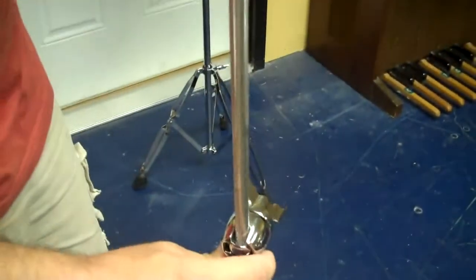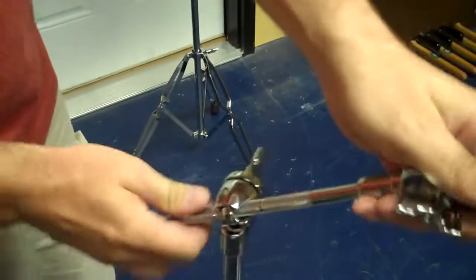So a straight stand is straight. A boom stand has a boom arm that you can move around.